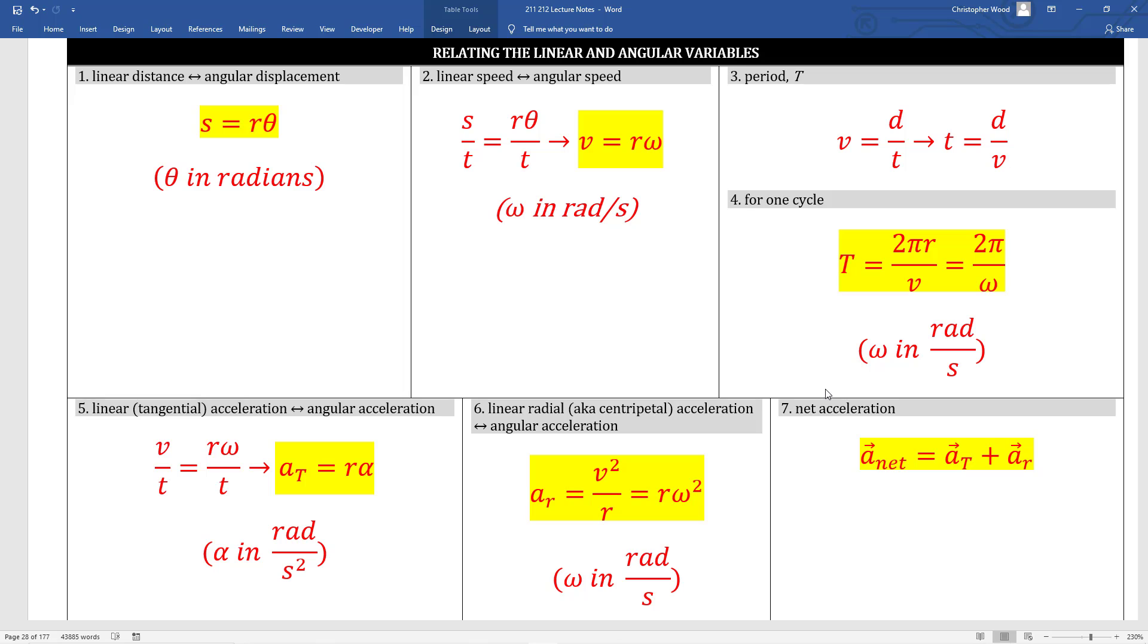Centripetal acceleration, also known as radial acceleration, as in along the radius line, hence the subscript r, is equivalently given by r omega squared.